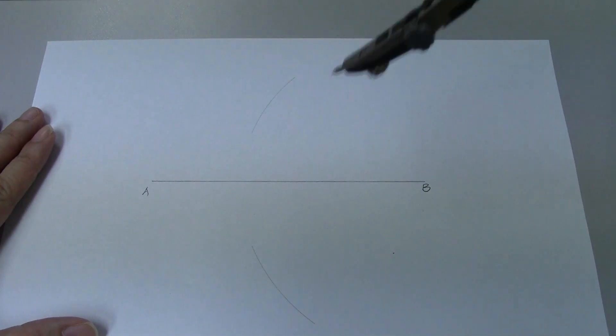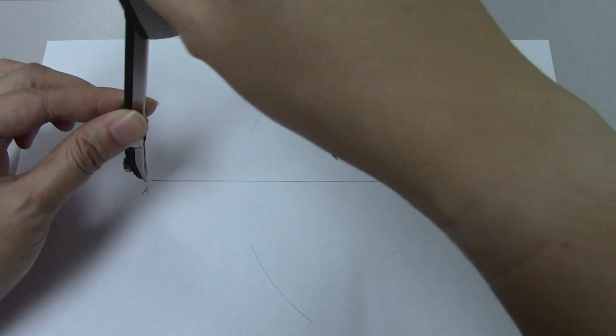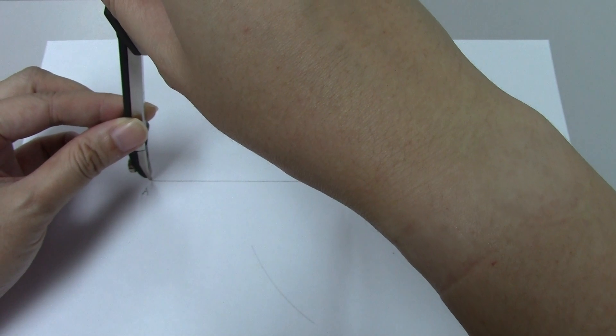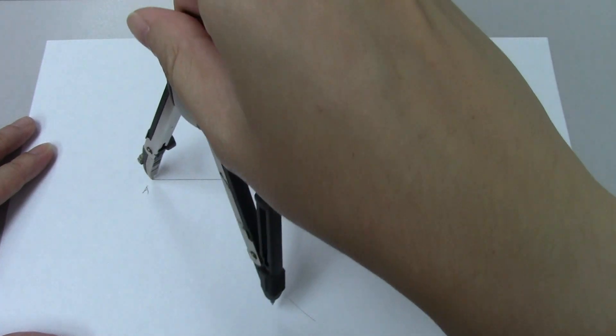Step three, you're going to repeat the process again without changing the width of your compass. Now, needle point is at point A. Draw an upper arc and a lower arc.